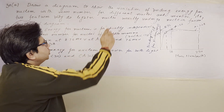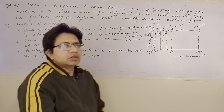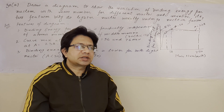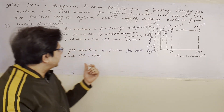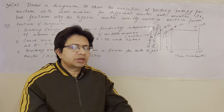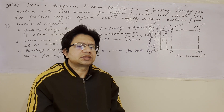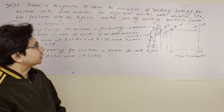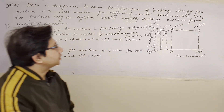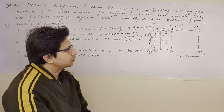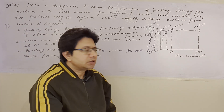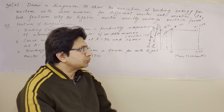In the next part: why do lighter nuclei usually undergo nuclear fusion? The answer is they undergo nuclear fusion so that their mass number becomes large — in the range of 30 to 170 — so that they become stable. The binding energy per nucleon goes up and they become stable, which is the reason they fuse.